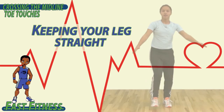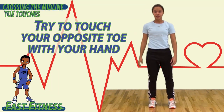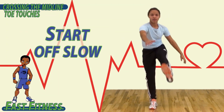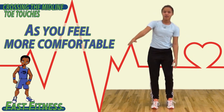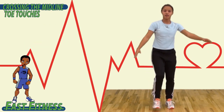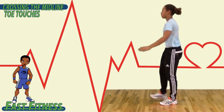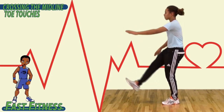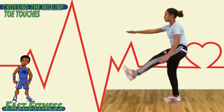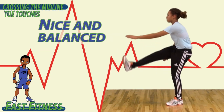To begin, keeping your legs straight, try to touch your opposite toe with your hand, then switch. Start off slow, and as you feel more comfortable and balanced, go ahead and increase the speed. Cross that midline of your body, touching your hand to your toe. Remember, try to keep your leg as straight as you can. Chest up, head looking forward, nice and balanced.